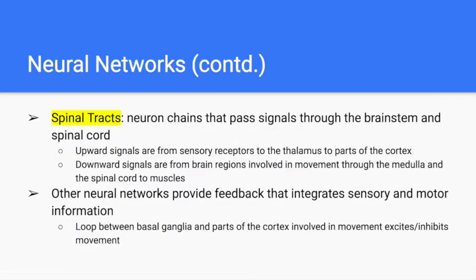Spinal tracts are neuron chains that pass signals through the brain stem and the spinal cord. Signals going up a spinal tract are from sensory receptors to the thalamus to parts of the cortex. Signals going down a spinal tract are from brain regions involved in movement to the medulla, to the spinal cord, to the muscles.